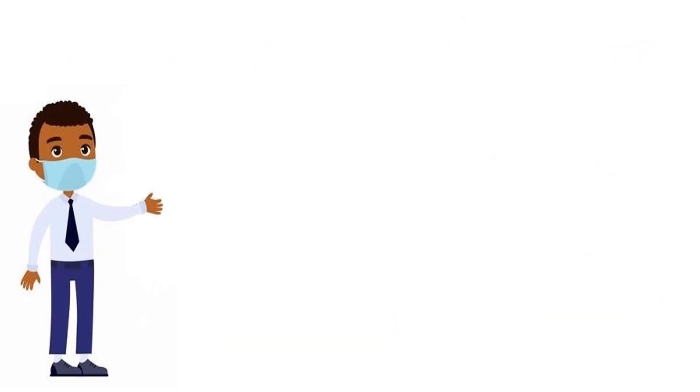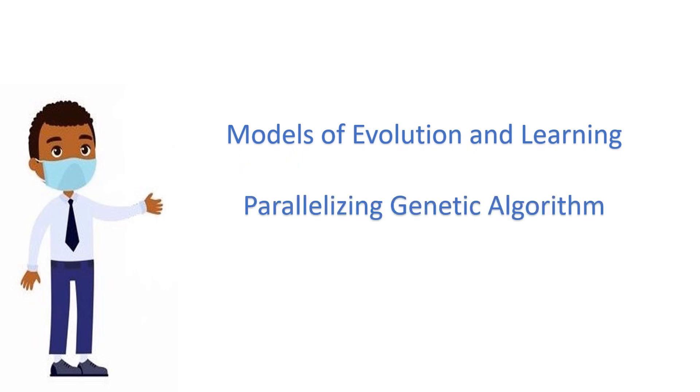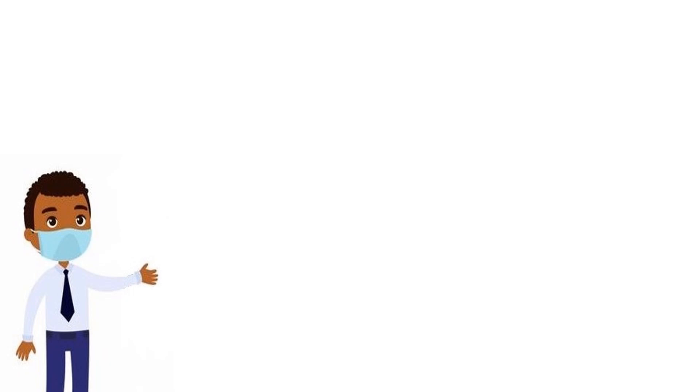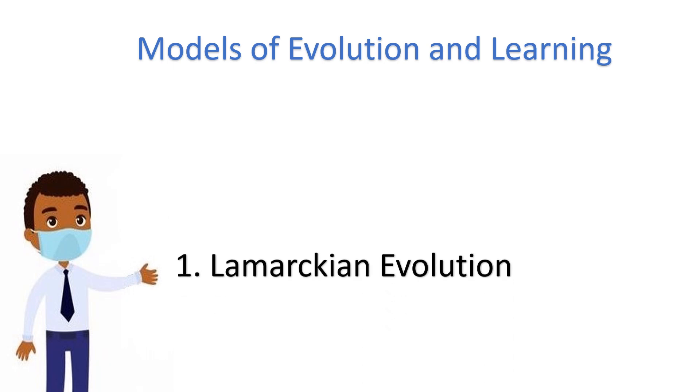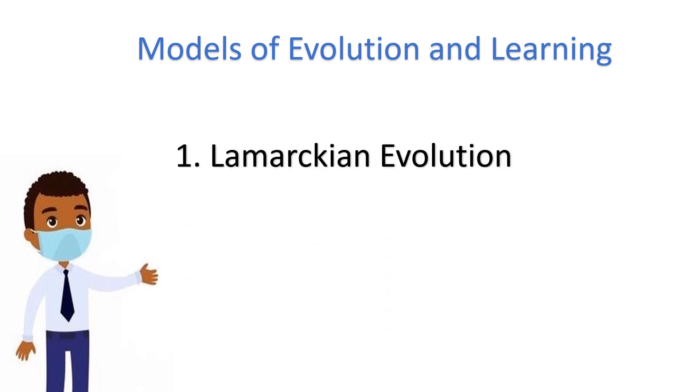Hi there, today our topics are models of evolution and learning, parallelizing genetic algorithms, and learning set of rules. First, let's discuss models of evolution and learning. In this we have two main evolutions: Lamarckian evolution and Baldwin effect.